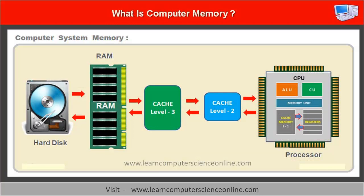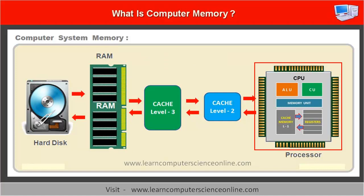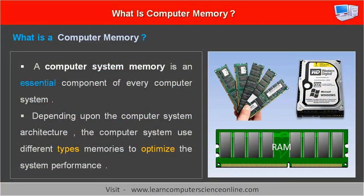Whenever a computer program is to be executed, the operating system loads the executable copy of the program software and its data into the computer's main memory. The microprocessor then starts the program execution by retrieving and executing these program instructions one by one. Depending upon the computer system architecture, the computer system makes use of different types of memories in order to optimize the system performance.